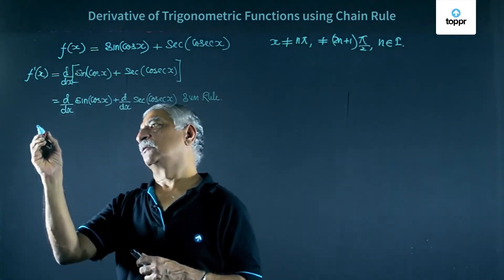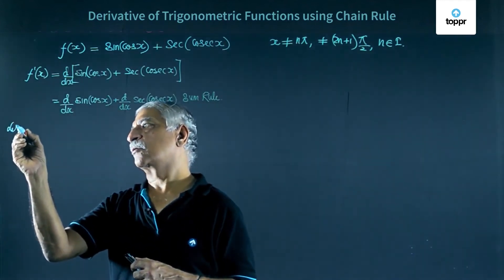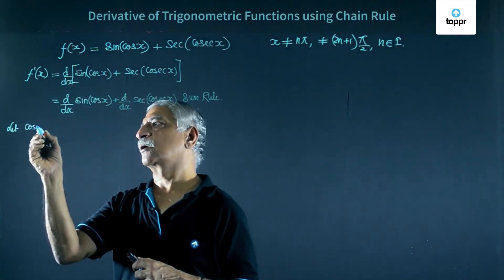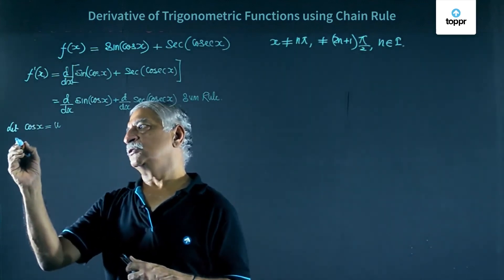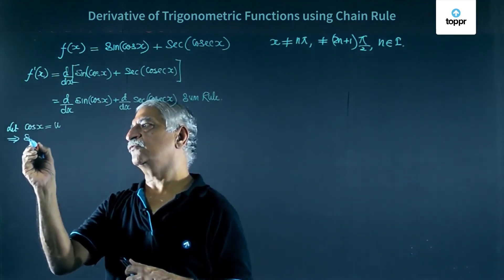We take the first one. We say let cos x, say this is equal to u. This implies sin of cos x is equal to sin u.